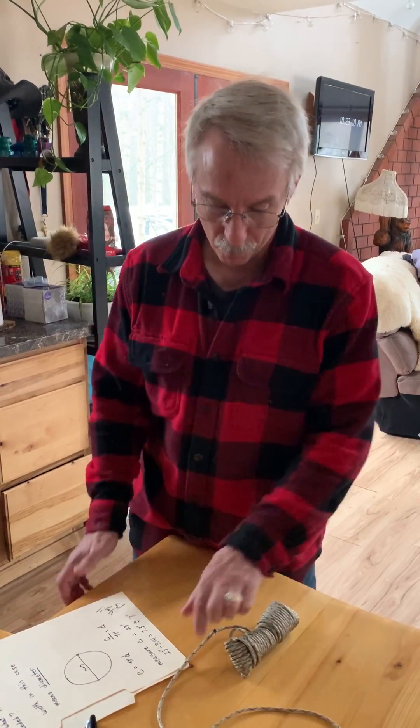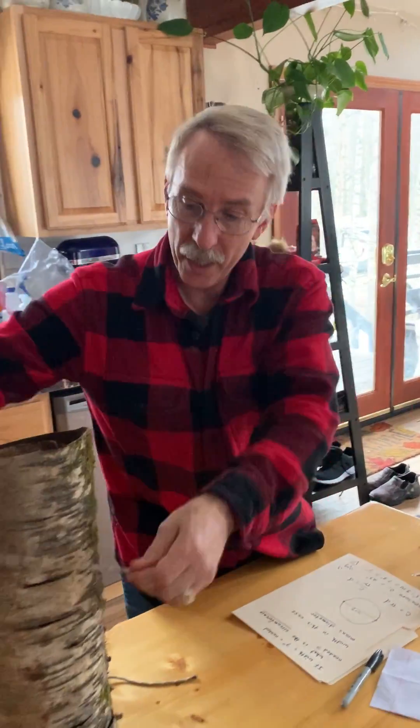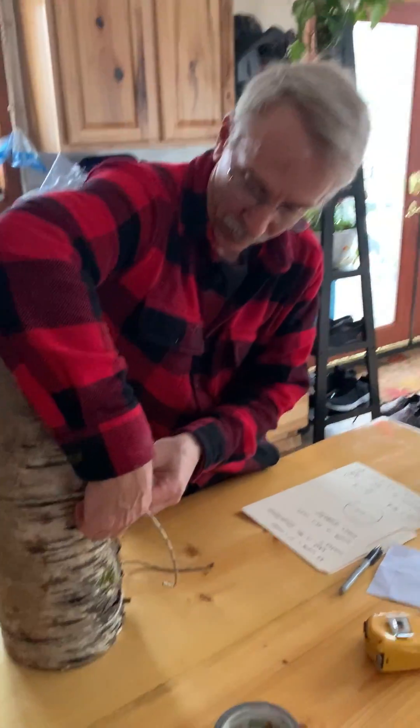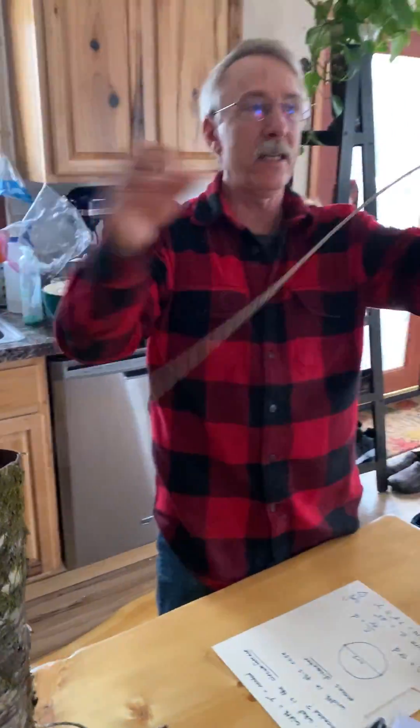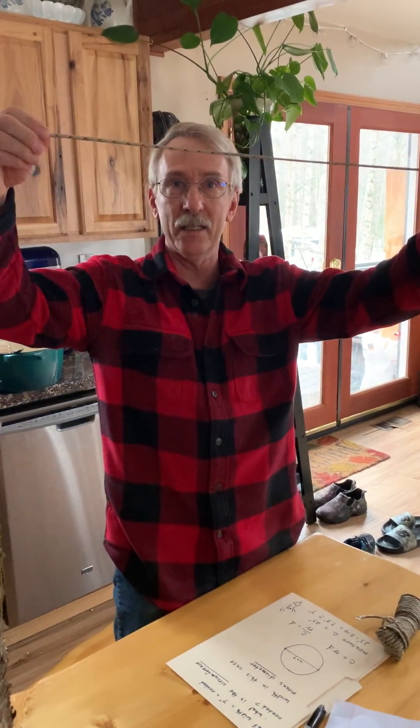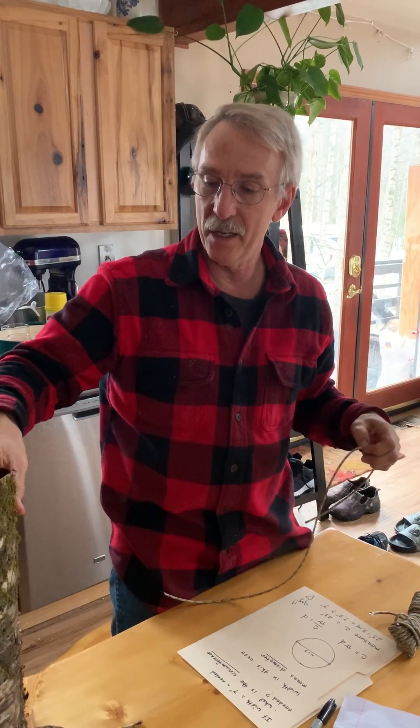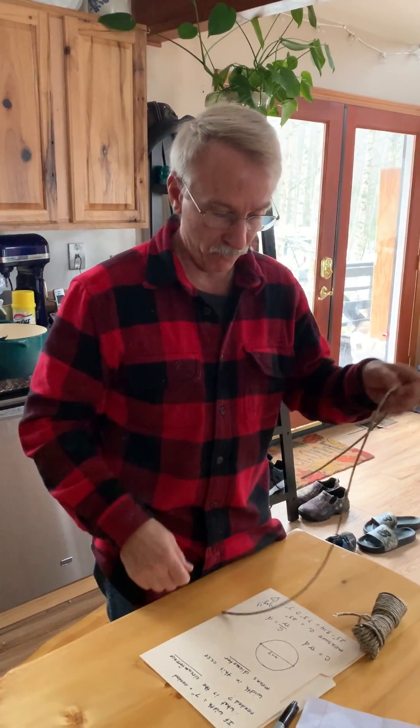So the point is that you have found a dead tree and you put a string around it like this, decide how long it is, and you measure this distance. And now you want to know, is that going to give me a diameter that I need for the kind of bird that I'm trying to make a nesting house for?